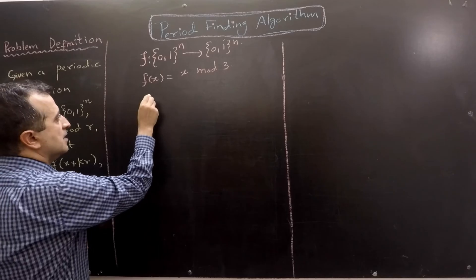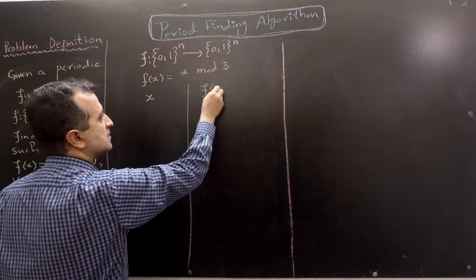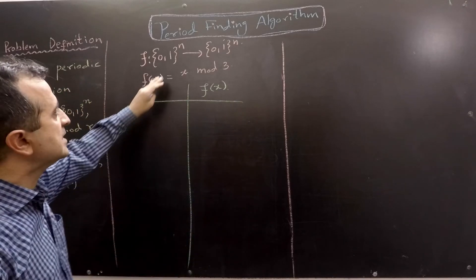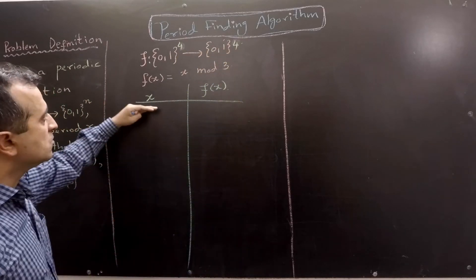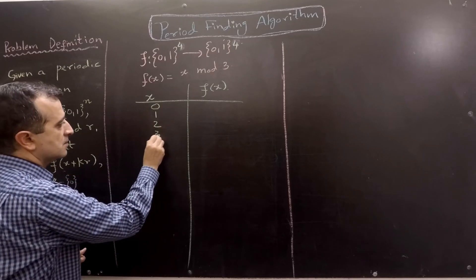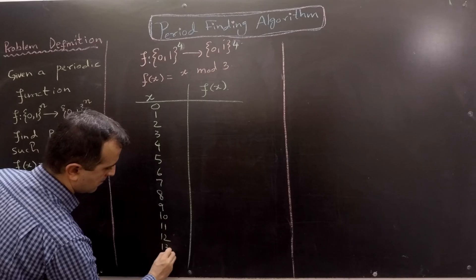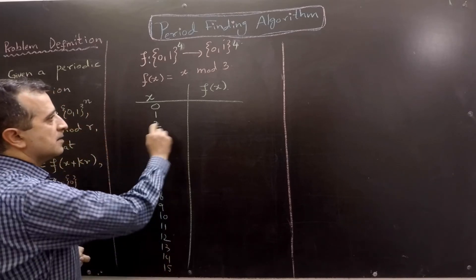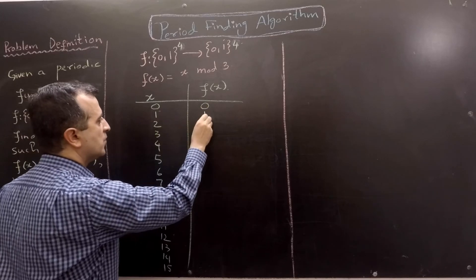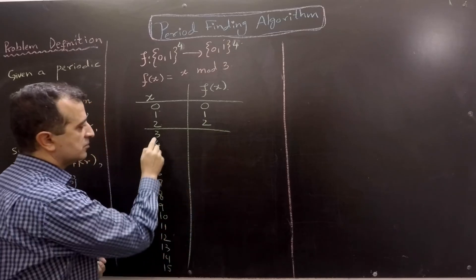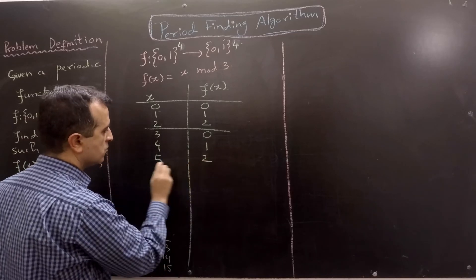We have the inputs and corresponding outputs of the function. Because the function takes 4 bits as input, it will accept inputs from 0 to 15, and the outputs will be input mod 3. So for 0 we get output 0, for 1 we get output 1, for 2 we get output 2, for 3 we once again get output 0, for 4 we get output 1, for 5 we get output 2, and so on.